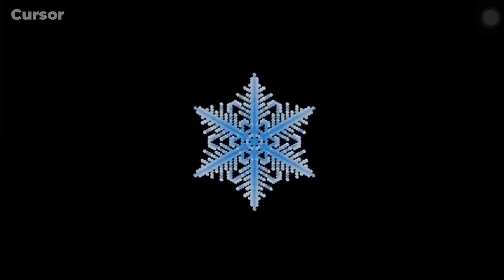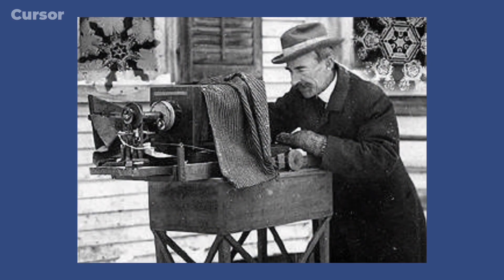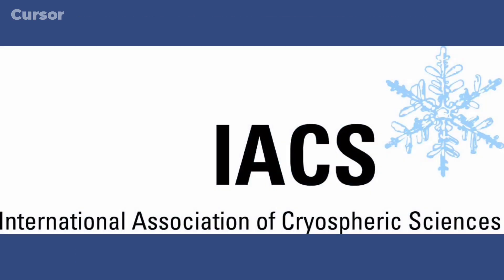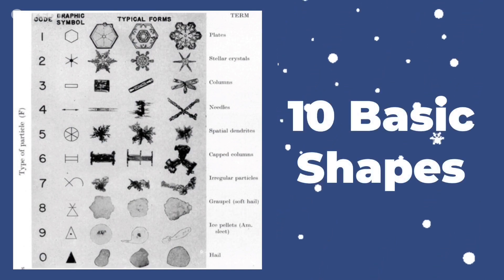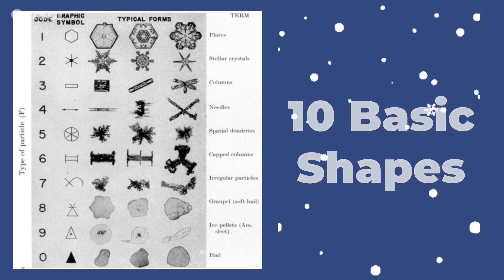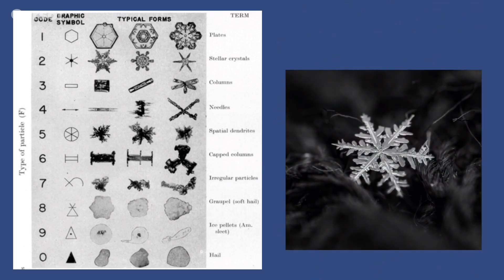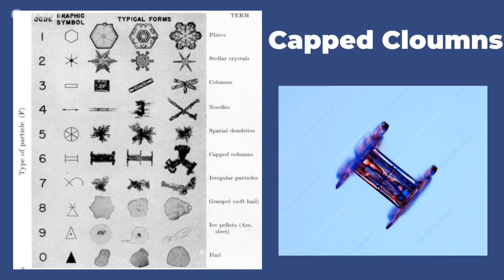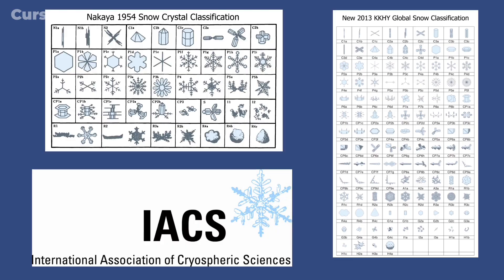Once the initial droplet freezes, the snowflake begins to grow as it moves through the clouds. In 1951, scientists from an organization now called the International Association of Cryospheric Science, or IACS, devised a classification system that characterized snowflakes into 10 basic shapes. These shapes include the stellar crystals that many people are familiar with, as well as lesser-known forms such as capped columns. The IACS classification system is still in use today, although there are other more complex classification systems as well.